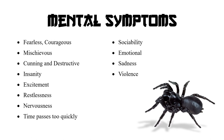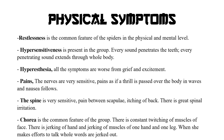Sociability — जो patient होता है वो काफी social और emotional होता है। Sadness — इसकी problem grief की वजह से बढ़ती है और mental symptoms में sadness देखने को मिलती है। Violence — spider group का patient काफी violent होता है। अब हम इनके physical symptoms की तरफ move करते हैं।